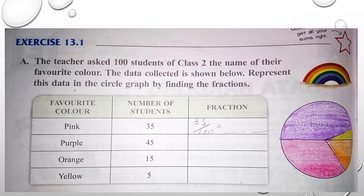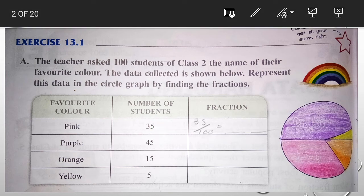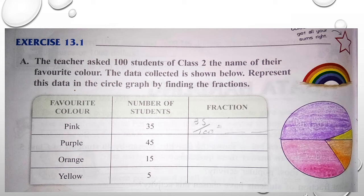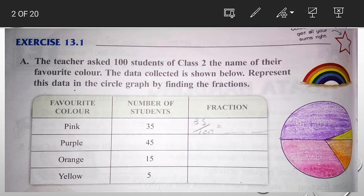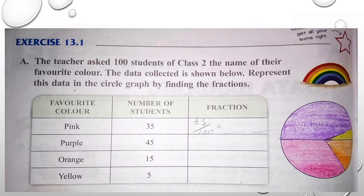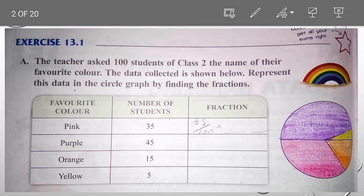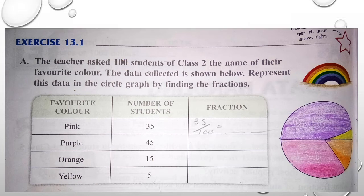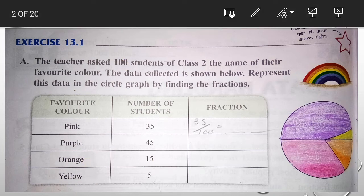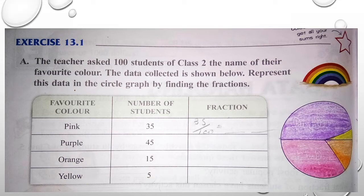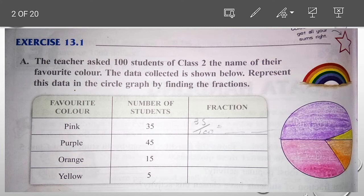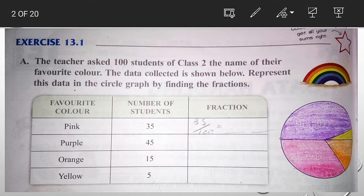Out of 100, 35 students' favorite color is pink, 45 students' favorite color is purple, 15 students' favorite color is orange, and 5 students' favorite color is yellow. If you want to add, it will be 100.